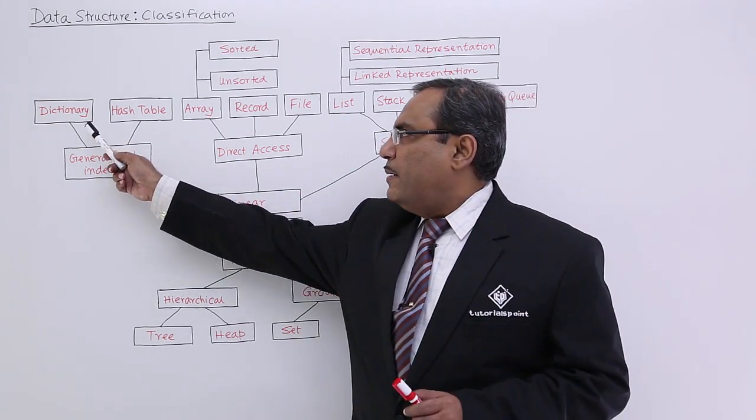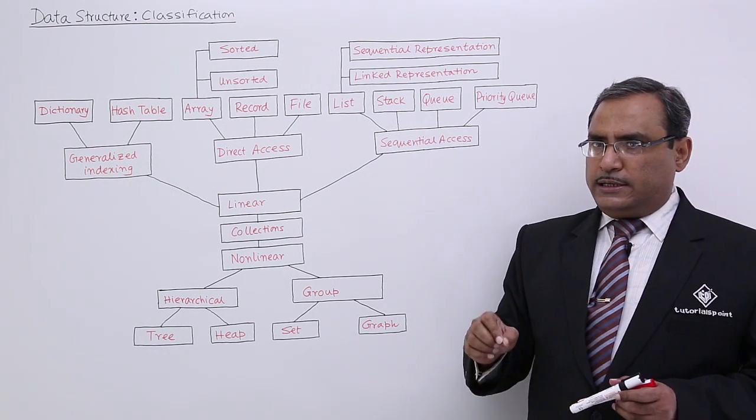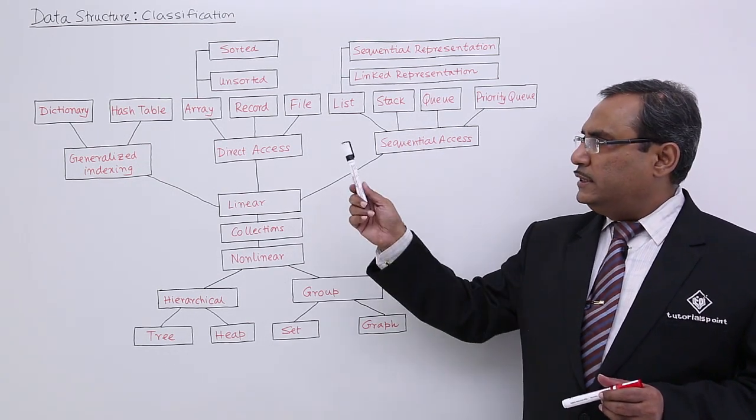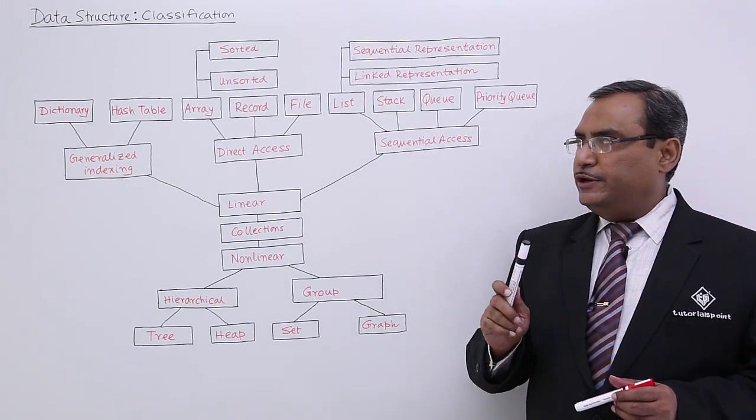For generalized indexing, we have the dictionary and hash table. In our data structure tutorial, we're having a discussion on hash table and trie structure. Please watch all the videos.